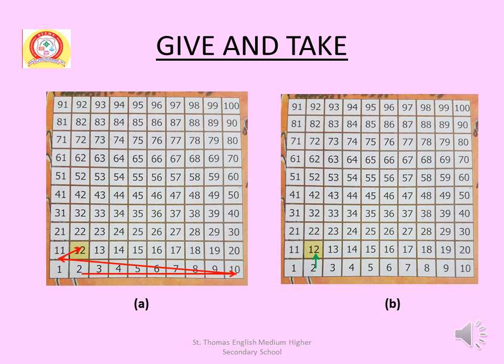Let us take the story of Kitu. Kitu has 100 rooms in his home and he wants to paint some of the rooms. See room number 2 and room number 12. How can he move from 2 to 12? See table A in the slide. He starts from room number 2 and adds 10 to 2 to reach room number 12 and paint it.